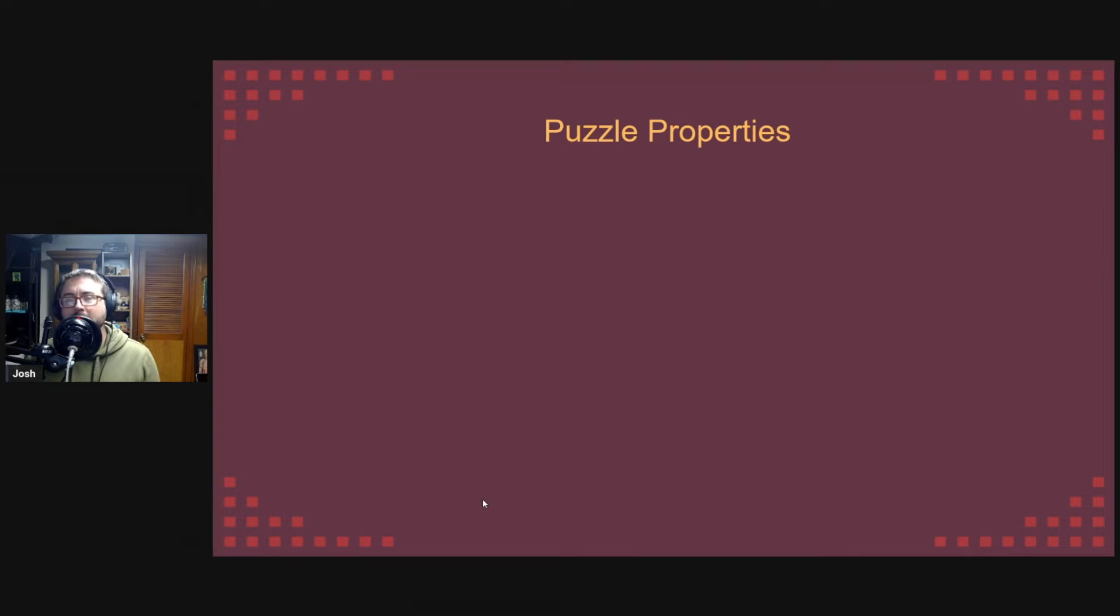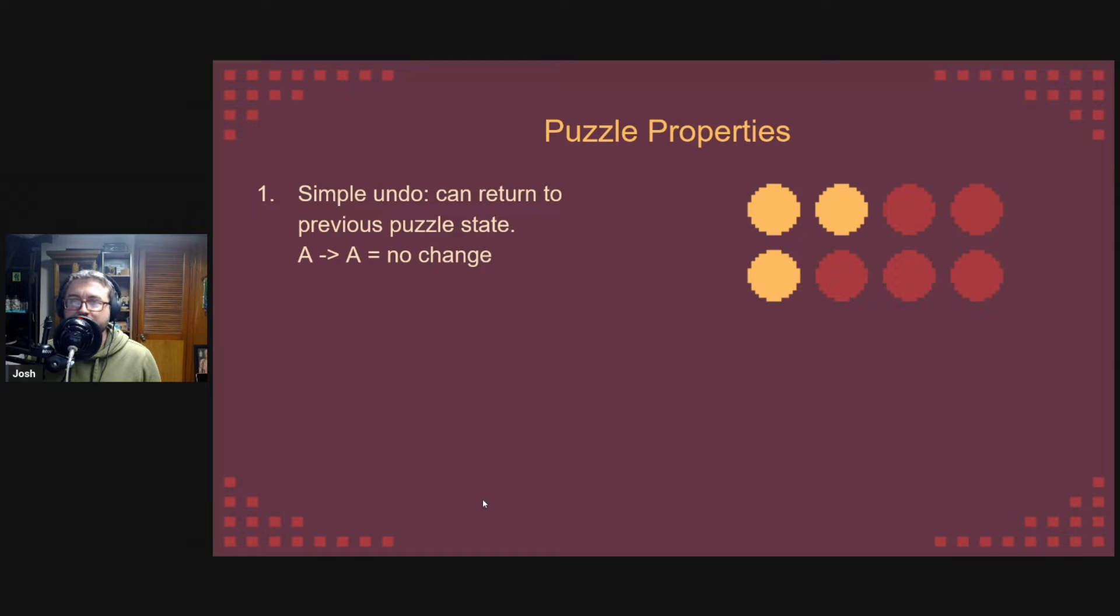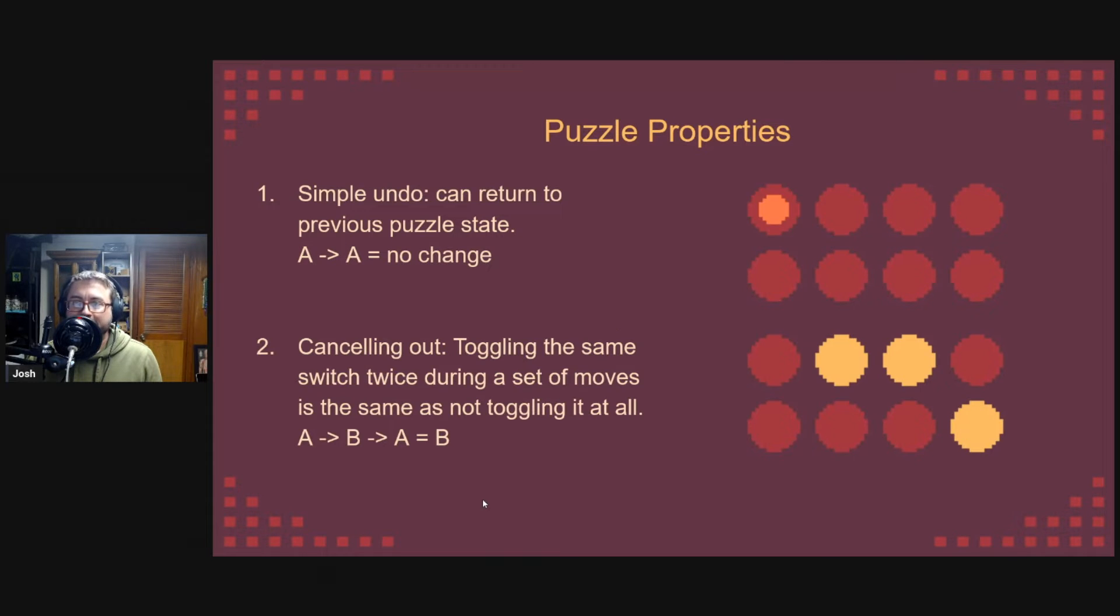Now, in order to solve all possible puzzles in this space, it helps to know what interesting properties your puzzle design might possess. The first thing we're going to look at is that an undo move is simple. If a player toggles switch A twice in a row, then there is no change to the puzzle state. It starts off blank and ends up blank. Now, we can extend that a little more. We can even throw a move in between these two toggles. If a player toggles switch A, then toggles switch B, then switch A again, it's the same puzzle state as if the player only ever toggled switch B. In essence, the two A toggles cancel each other out, regardless of how many moves you have in between them.